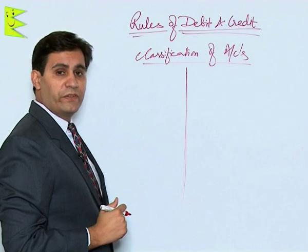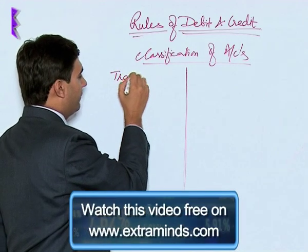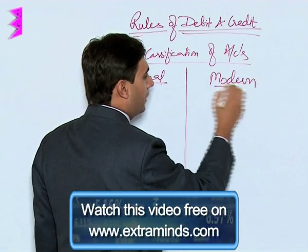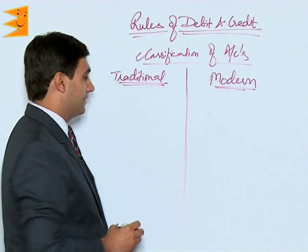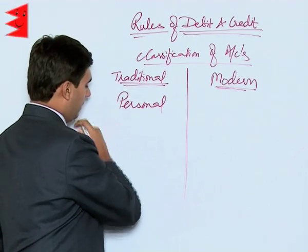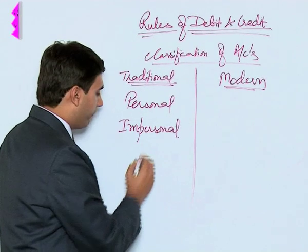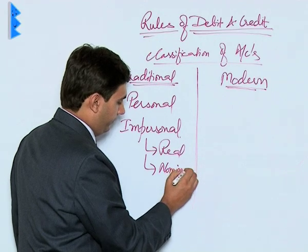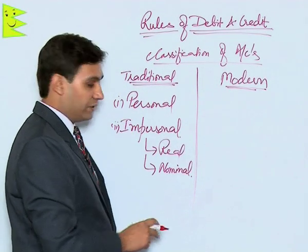The classification of accounts is on two bases. The first concept is referred to as traditional classification, and the other is the modern approach. Under traditional classification, accounts are divided into two categories: the first being personal and the second being impersonal. Impersonal accounts are further classified as real and nominal.